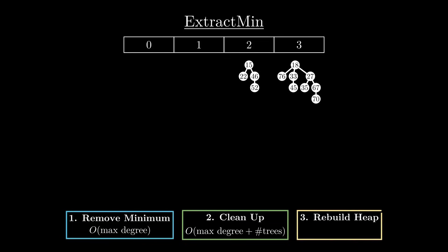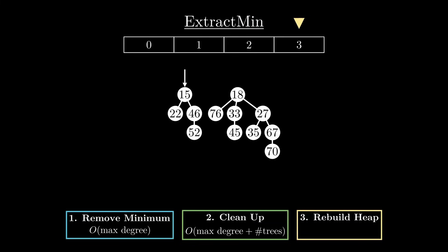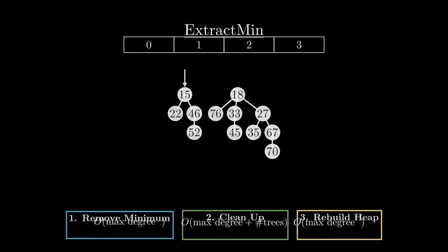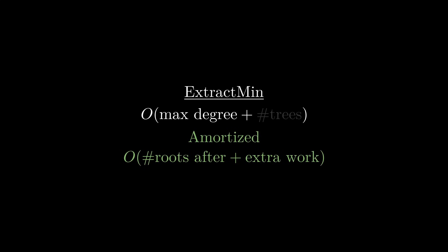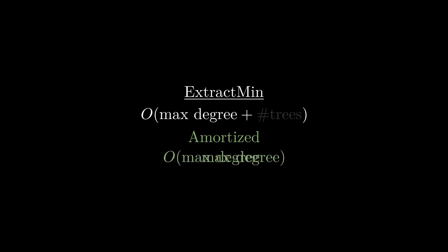Now we can start rebuilding our heap. We iterate over the array and build up a new root list, updating the heap minimum during this phase. Because of the heap property, we only need to check tree roots. The total work for this phase depends on the size of the array, which again depends on the maximum node degree. Our amortized analysis showed that we can ignore the time spent for each tree and that only the work on top of that actually matters — and that extra work depends on the maximum node degree. So it all relies on the maximum node degree: if we can show that node degrees generally stay quite small, ExtractMin will be fast.